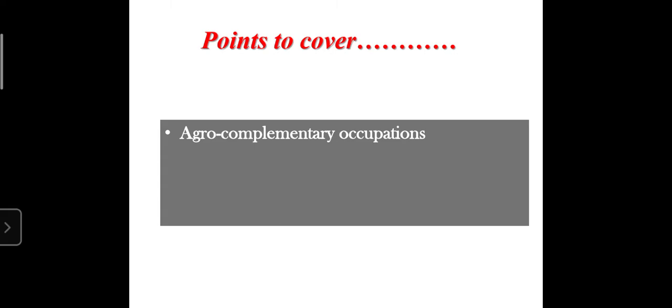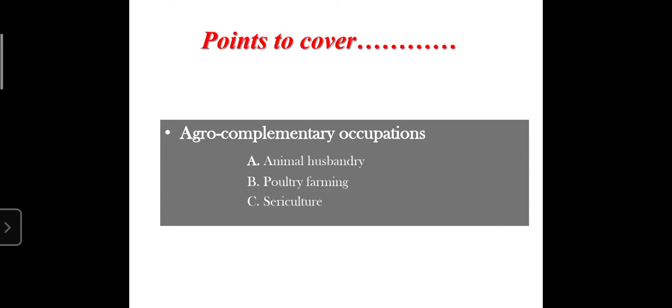Today we are going to see the topic which is more interesting and has maximum capacity to earn — that is agro complementary occupations. The first topic is animal husbandry, the second is poultry farming, and the third is sericulture. All of these topics should be familiar to you.